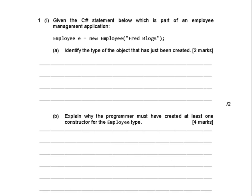Question one. Given the C# statement below, which is part of an employee management application — this is used quite a lot in the exams — you've basically got a little scenario set up for you. We're storing data about people who work for us, and the line of code says `Employee e = new Employee("Fred Bloggs")`. You have to figure out stuff based on that statement. Identify the type of the object which has just been created. Employee isn't part of C#, so the person writing the system must have made a class with that name.